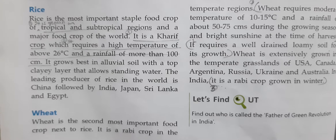Next is tea. Tea is a beverage as well as a plantation crop. It requires a cool climate and well-distributed high rainfall throughout the year for its growth. Hill slopes are preferred for the cultivation of tea as it needs well-drained loamy soil. It is a labor-intensive industry as leaves have to be picked by hand. The world's major tea-producing countries are Kenya, India, China, and Sri Lanka.